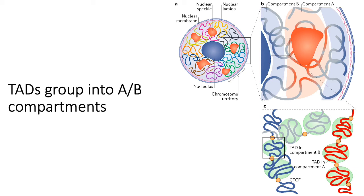Those A compartment regions also tend to have higher gene density, more chromatin accessibility, and more active histone modifications — all the features you generally expect of regions of the genome that are being actively transcribed.